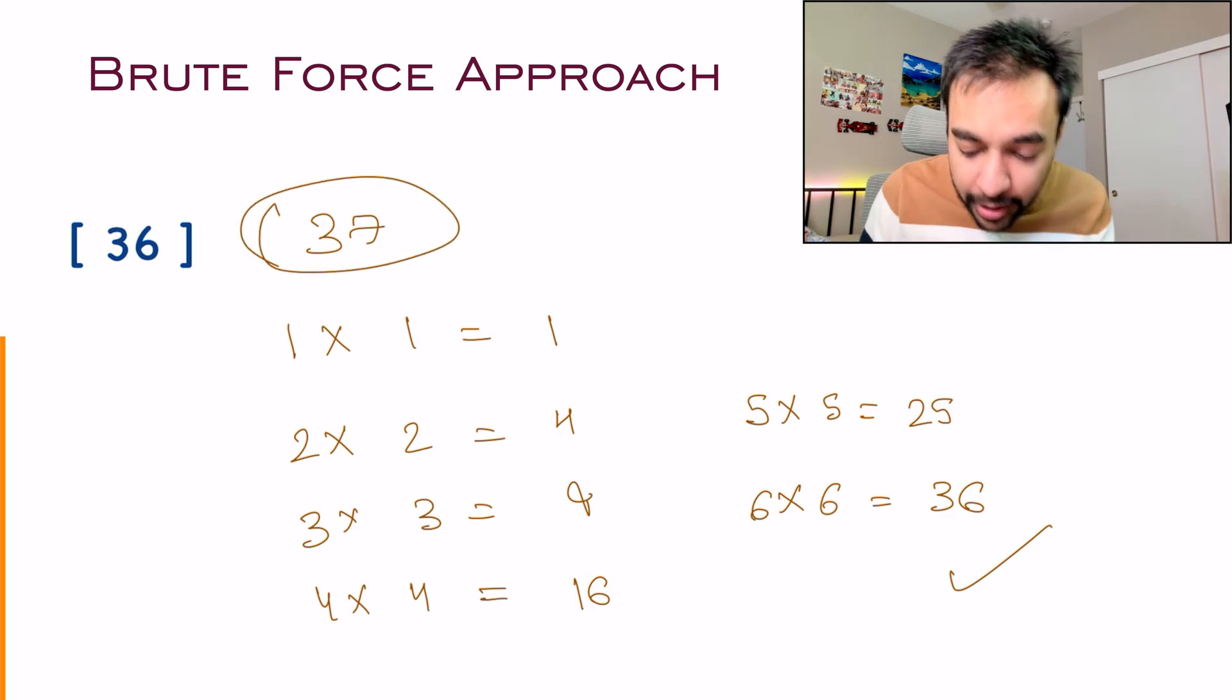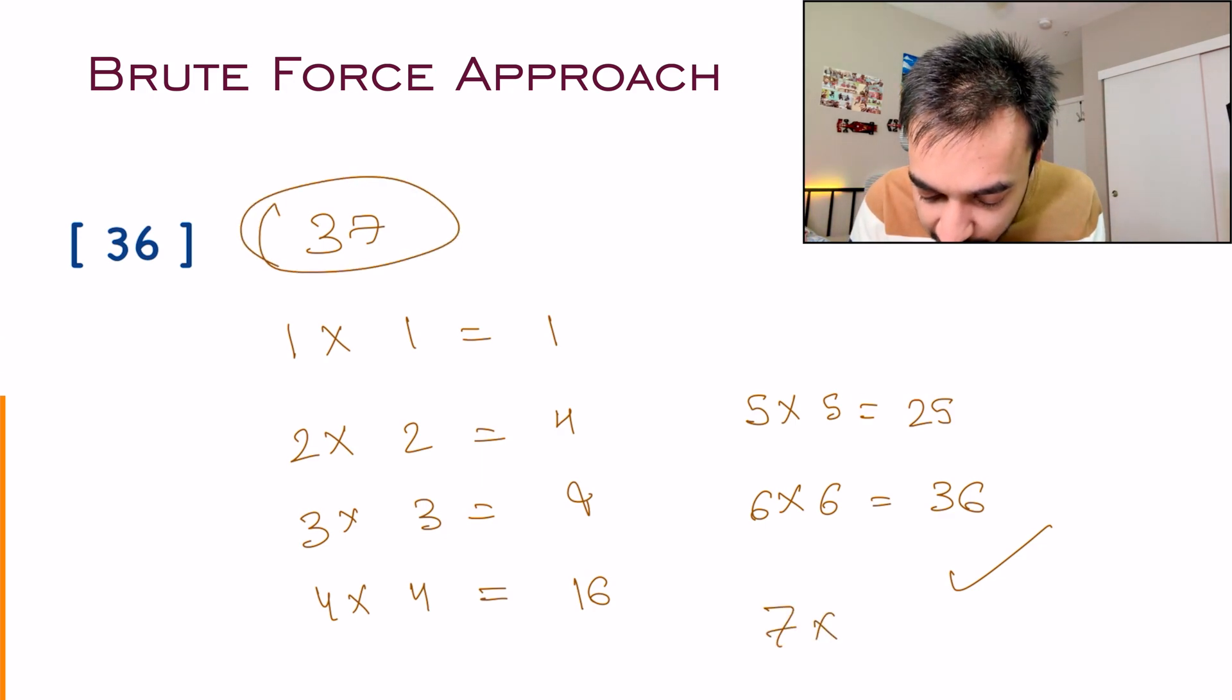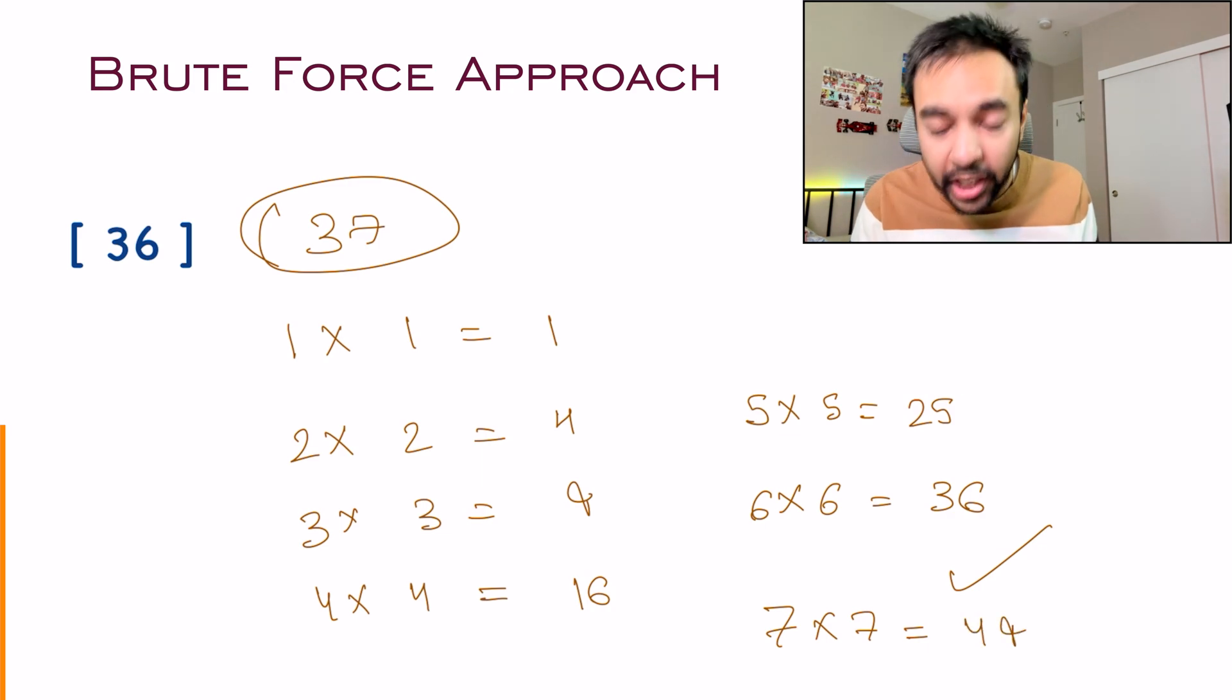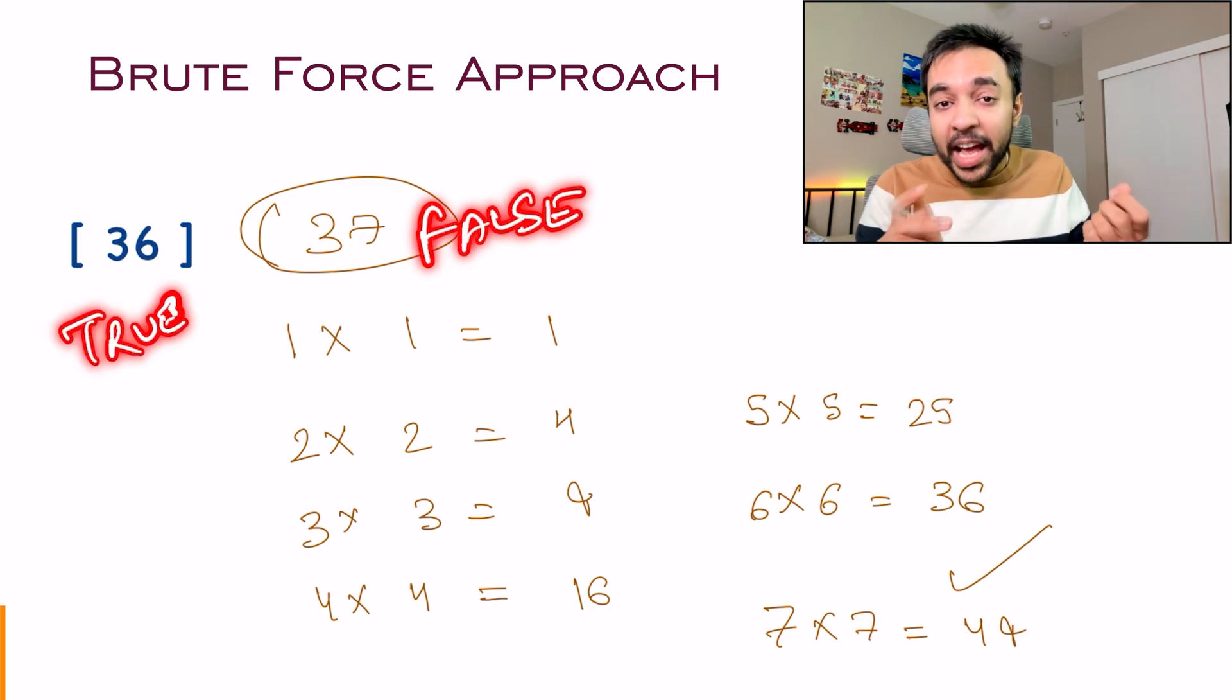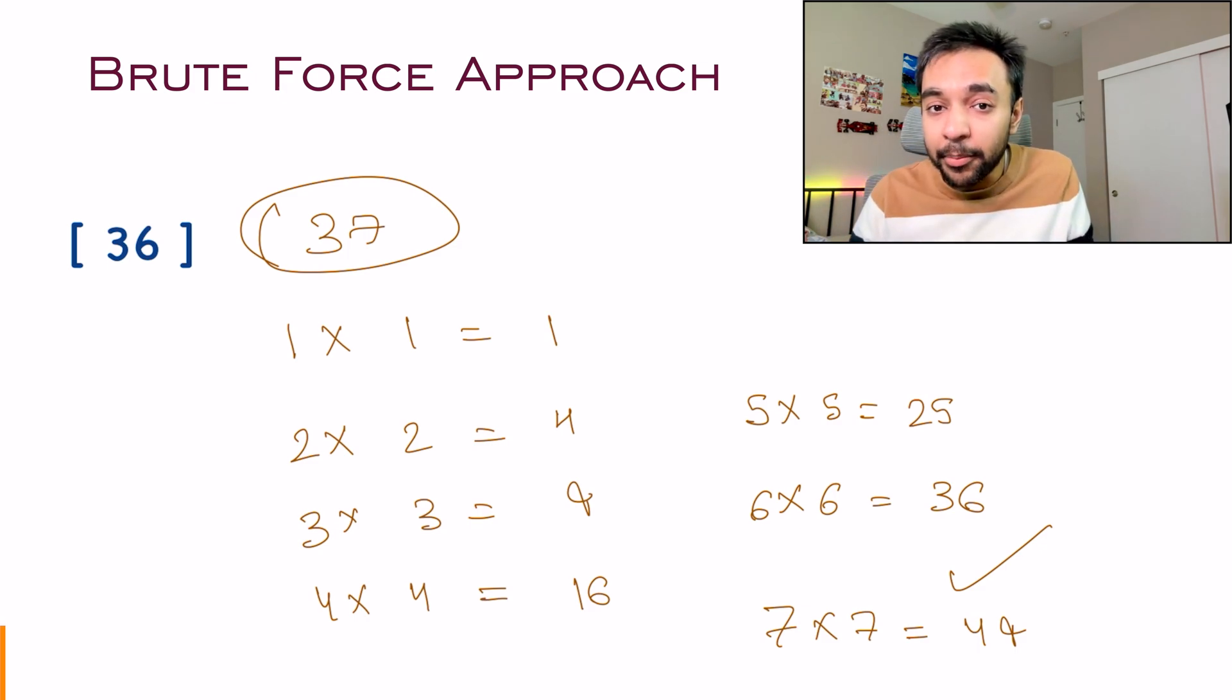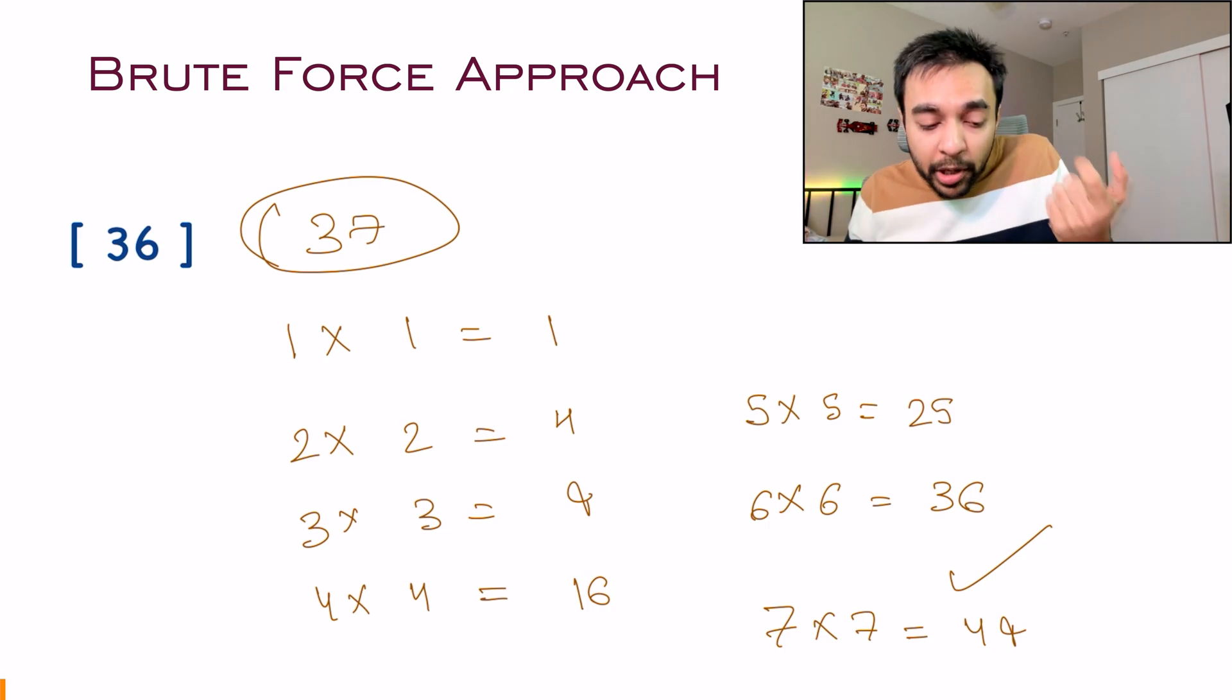If this number was 37 instead, then what will you do? Just keep on going ahead. You get 7 into 7 and then you arrive at 49. 49 is greater than 37. It means you do not need to process any further and that is where you can stop. So in that test case, you can return false as your answer. This is the brute force approach and it works perfectly every time. But what is the problem? You would be taking up order of n time to arrive at a solution because you are checking every integer possible.